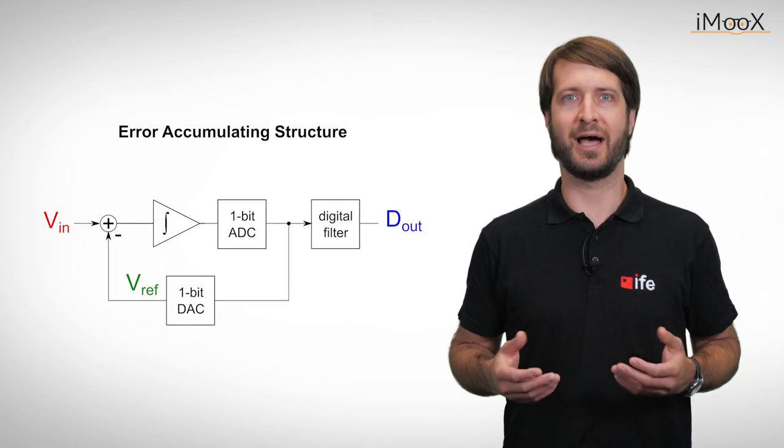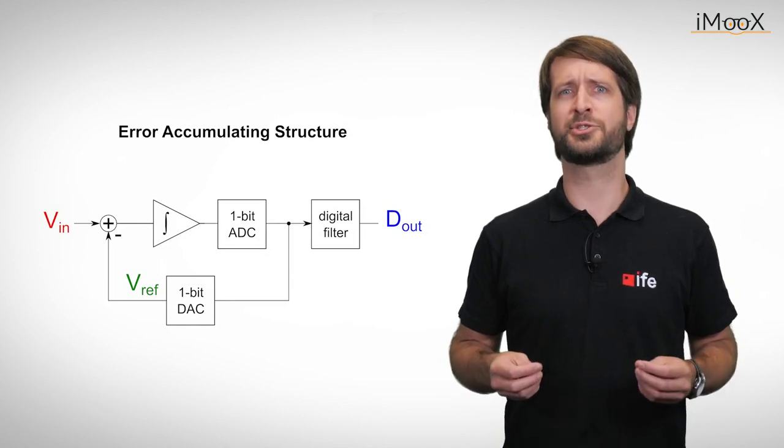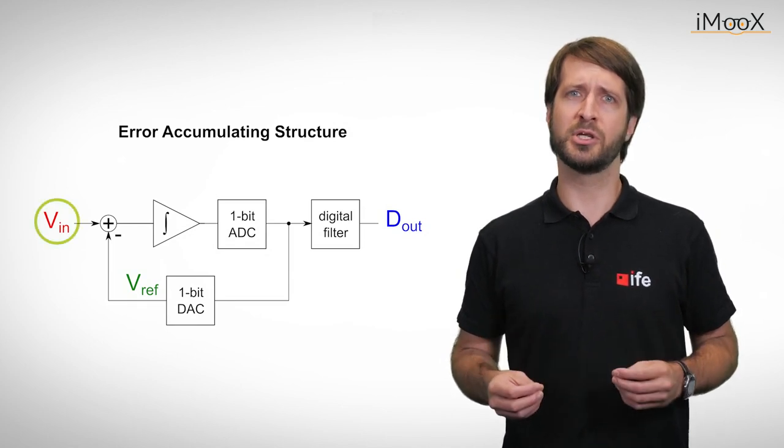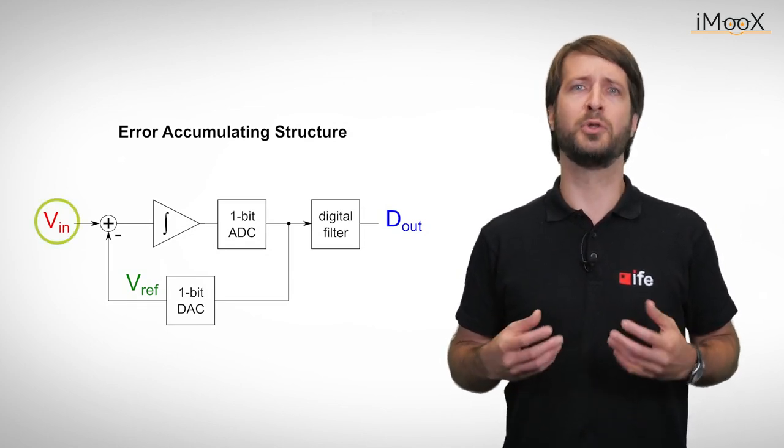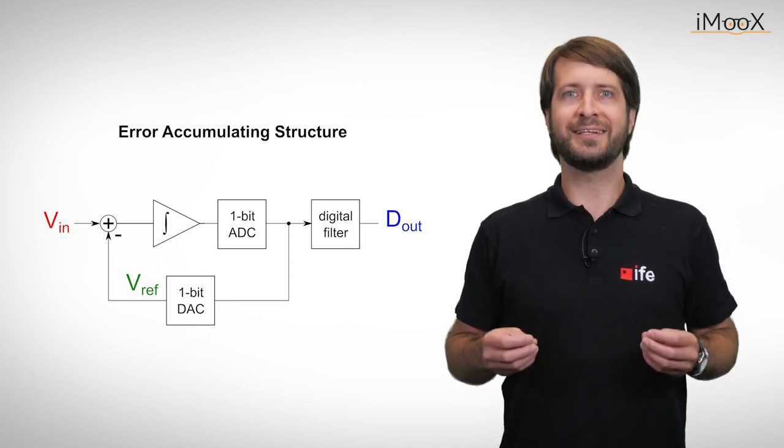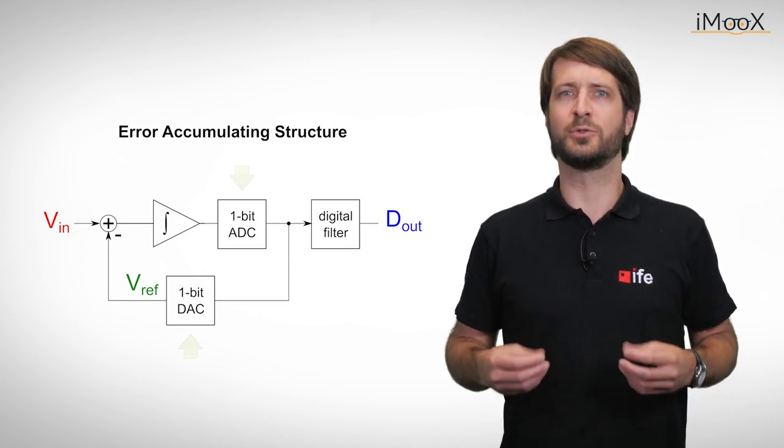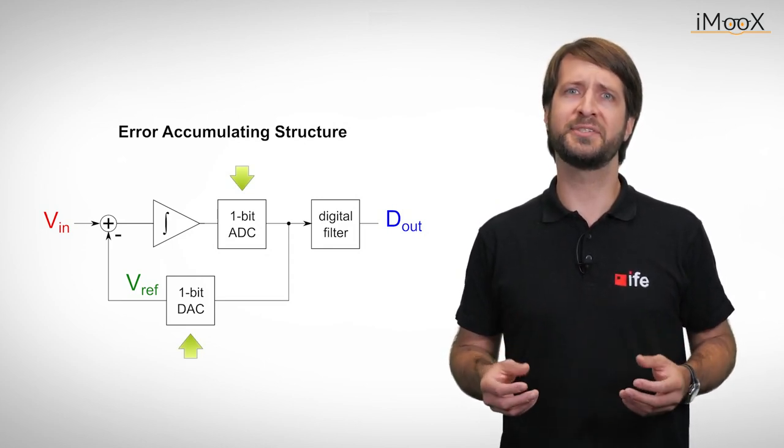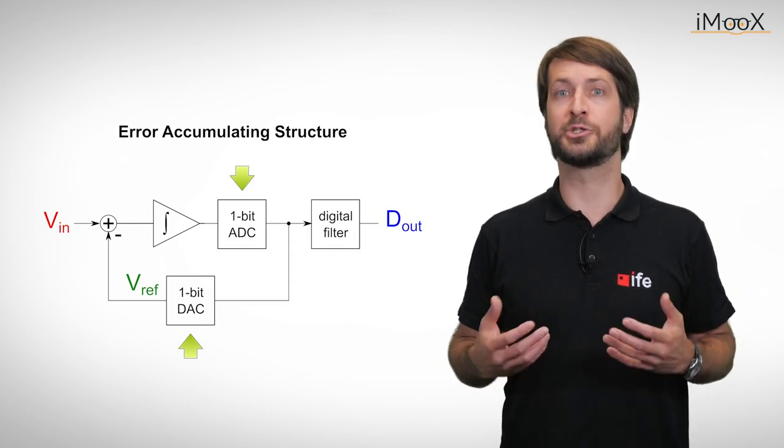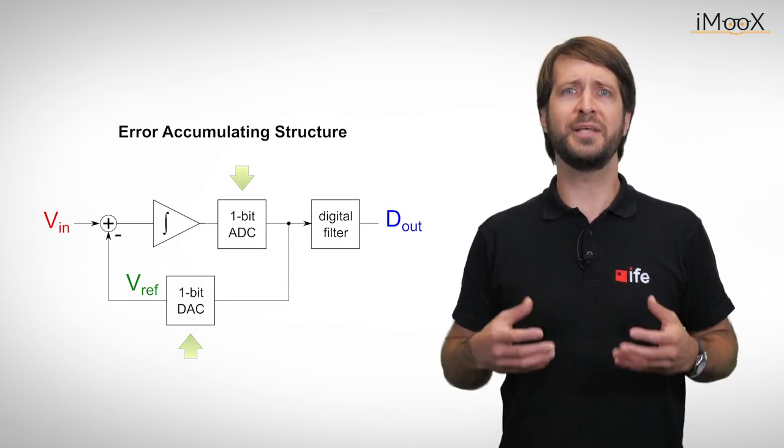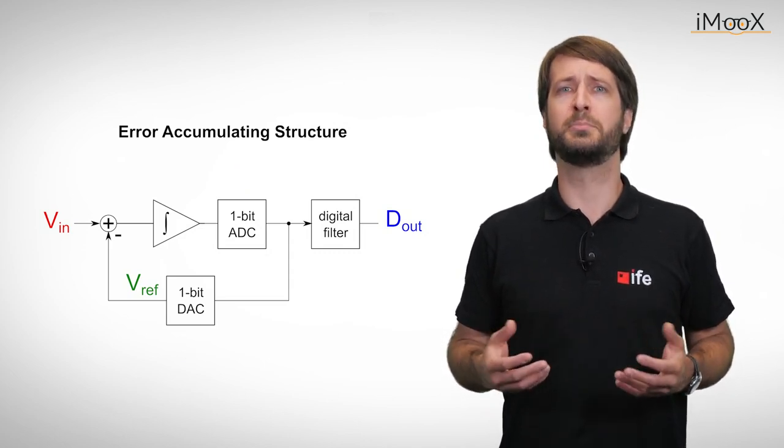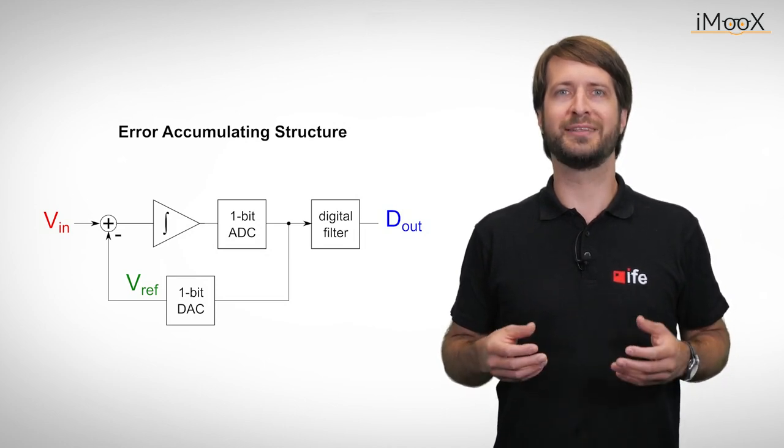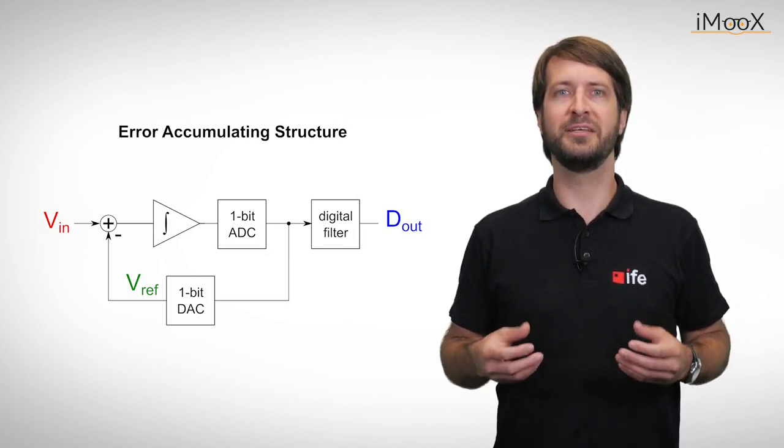Now that we understand the underlying process, some questions may arise. First, we assumed a constant input voltage for our example, which is of course not the normal case. Second, you might ask yourself, how is it that 1-bit conversions, as in this example, achieve the high resolution promised at the beginning with a relatively fast conversion time? To answer these questions, we need to get to know a process called oversampling. To understand it, we will look at the delta-sigma process from a different perspective.